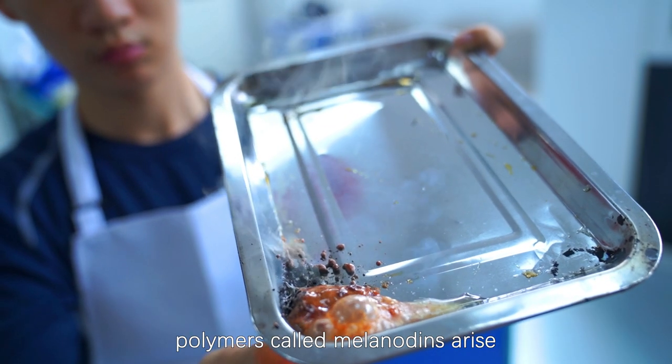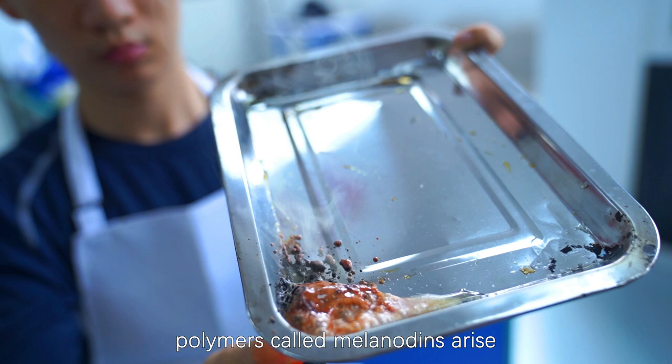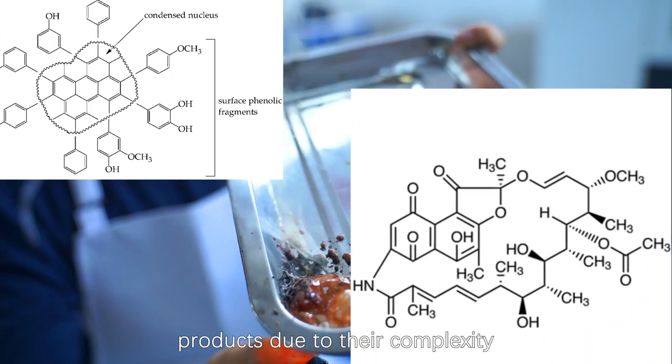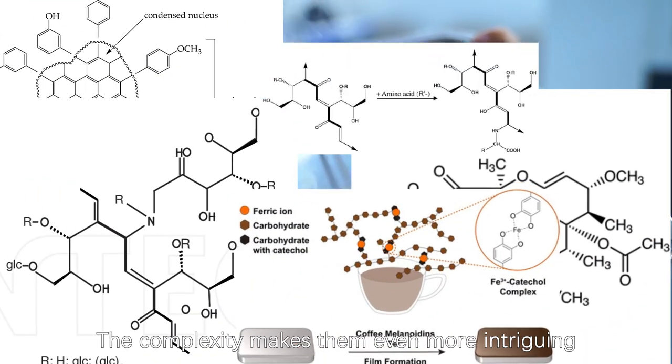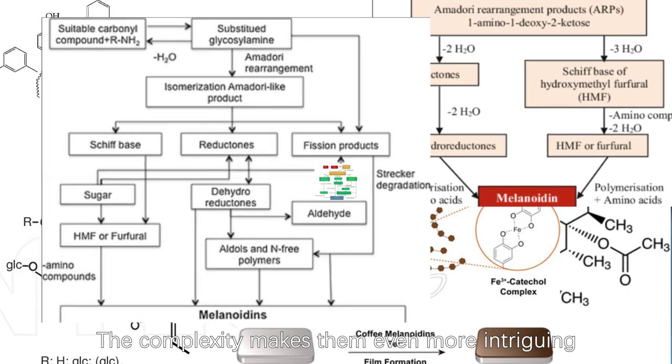Finally, an enormous mysterious group of polymers called melanoidins. It's hard to identify individual products due to their complexity, but the complexity makes them even more intriguing.